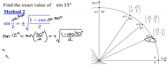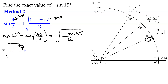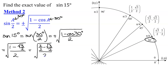So this equals the square root of 1 minus the cosine of 30 degrees, all divided by 2. Here's 30 degrees — the cosine value is the x-value, so it's the square root of 3 over 2, and that's all divided by 2. I need to combine these two terms with a common denominator of 2, so 1 is 2 over 2, minus the square root of 3 over 2, all divided by 2.